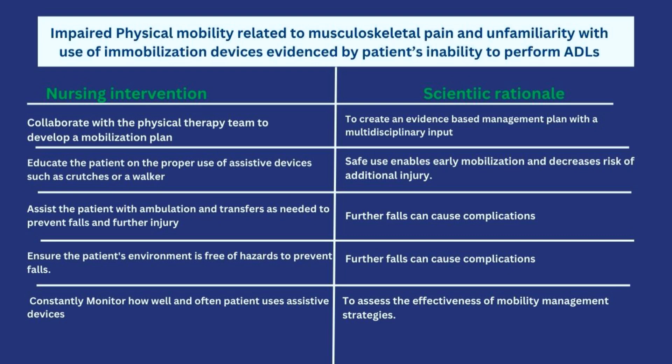Next, educate the patient on the proper use of assistive devices such as crutches, a walker, or a Zimmer frame, depending on what was provided. Safe use of these devices enables early mobilization and decreases the risk of additional injury — there is a difference between using a device and using it correctly. Then assist the patient with ambulation and transfers as needed to prevent falls and further injury, guiding them as they move around the ward.